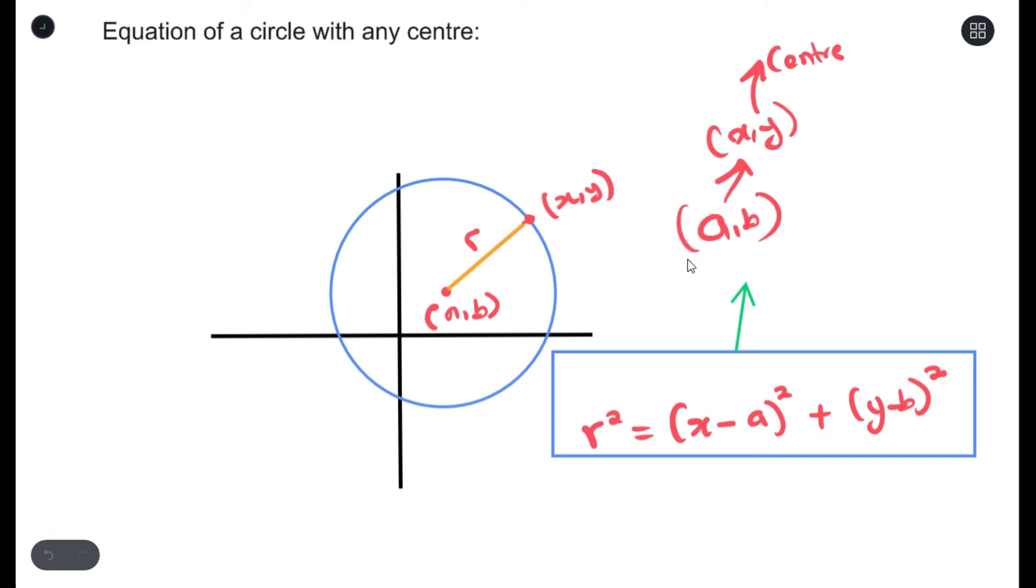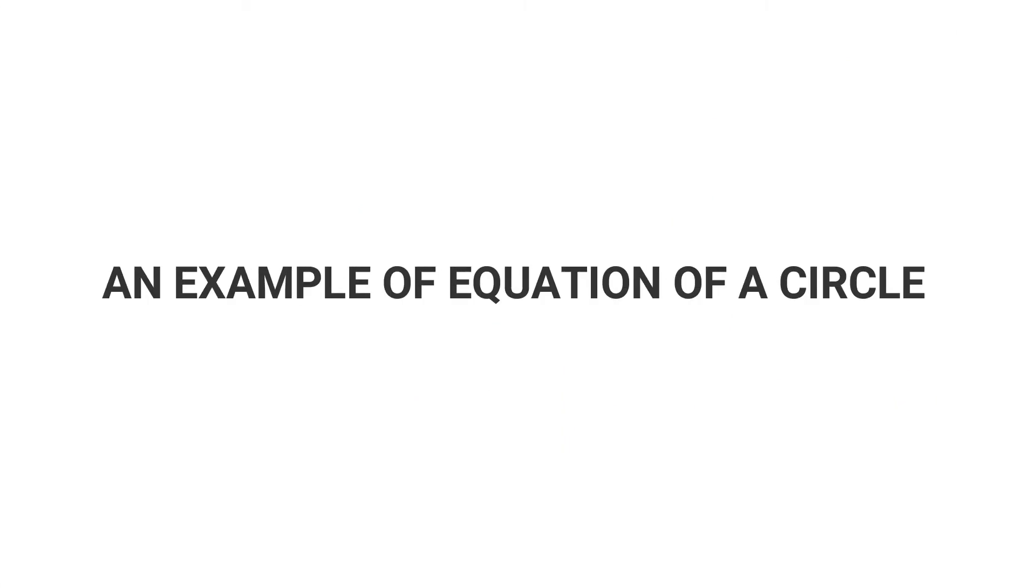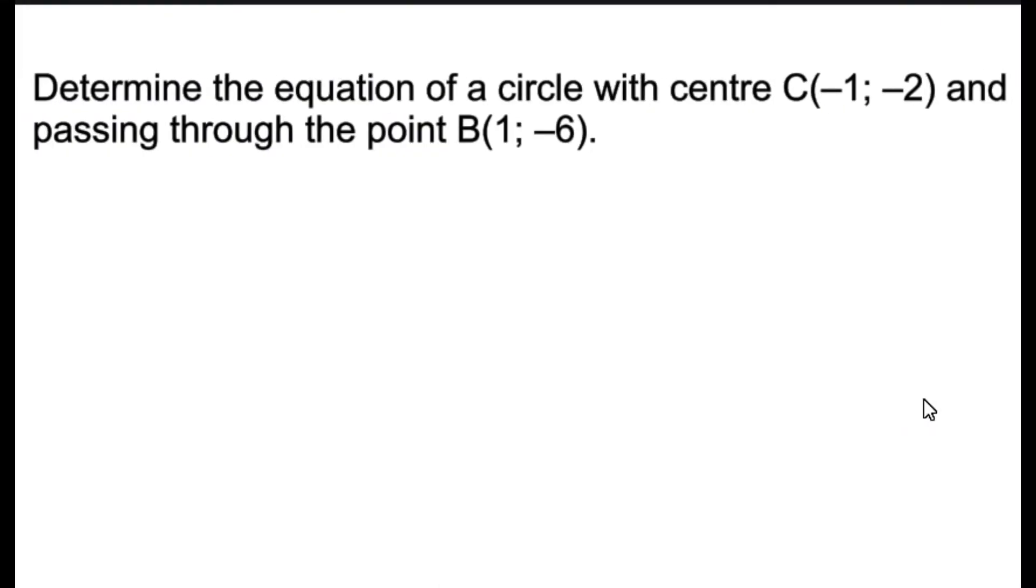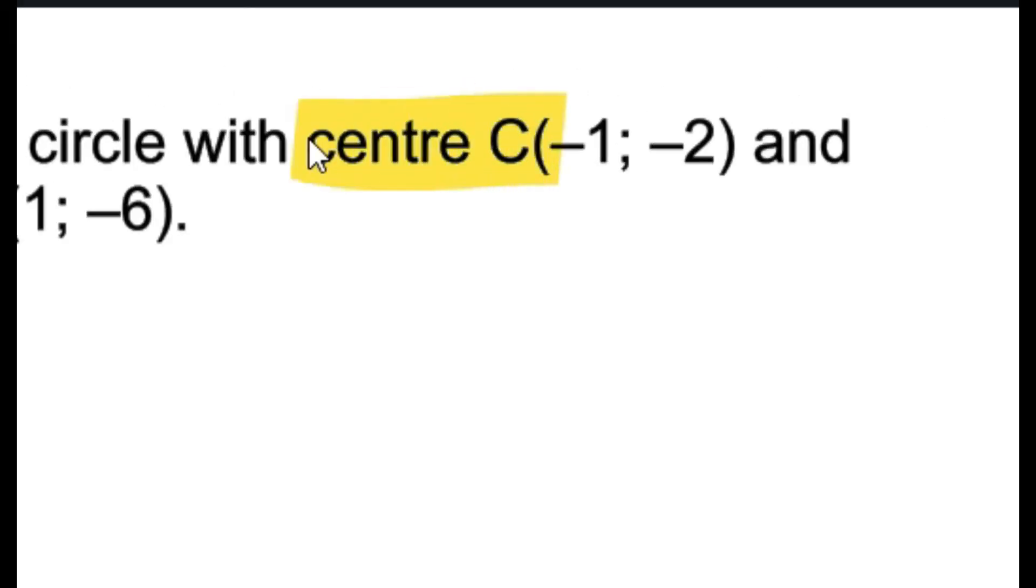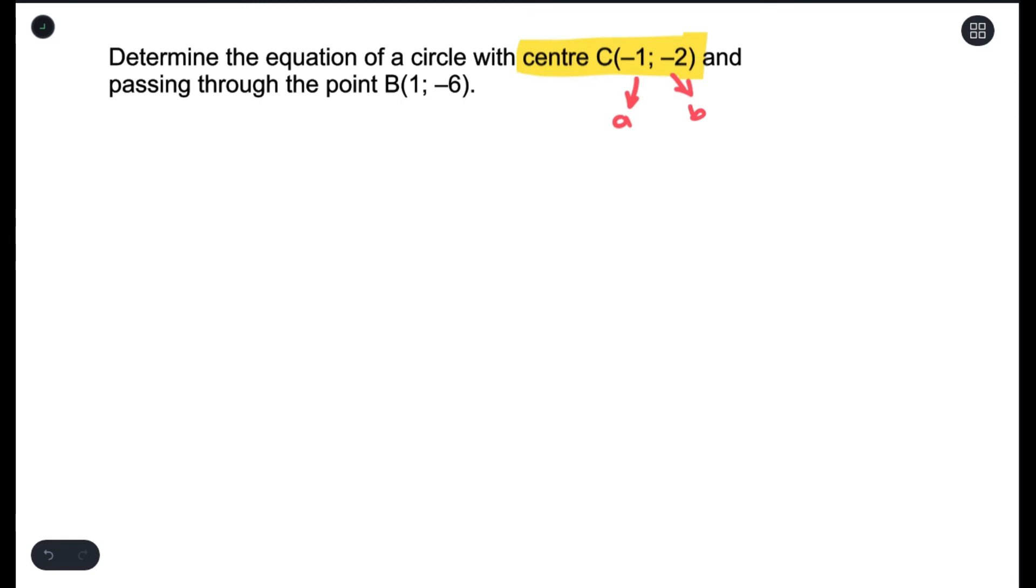This question says, determine the equation of a circle with center C(-1,2) and passing through the point B(1,-6). Since this here is our center, we understand that this would be a and this here would be b. So the first part of my equation, I could actually write it down.